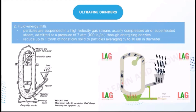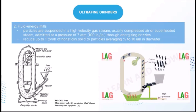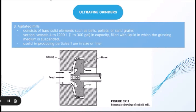In fluid energy mills, particles are suspended in a high-velocity gas stream, usually compressed air or superheated steam admitted at about 7 atm through energizing nozzles. The grinding chamber is an oval loop of pipe 25–200 mm in diameter and 1.2–2.4 m high; feed enters near the bottom through a venturi injector. These mills can accept feed particles up to 12 mm but are most effective with feed no larger than 100 mesh. They reduce up to 1 ton per hour of non-sticky solid to particles averaging 1.5–10 micrometers, using 1–4 kg of steam or 6–9 kg of air per kg of product. Loop mills can process up to 6,000 kg per hour.